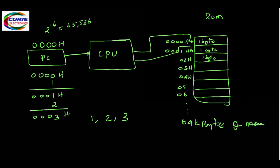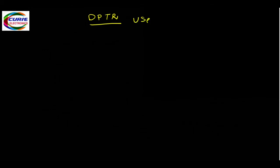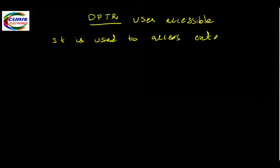Now we will see what is the data pointer. The data pointer, or DPTR, is used to access external RAM. It is user-accessible — the user can read and write its value.